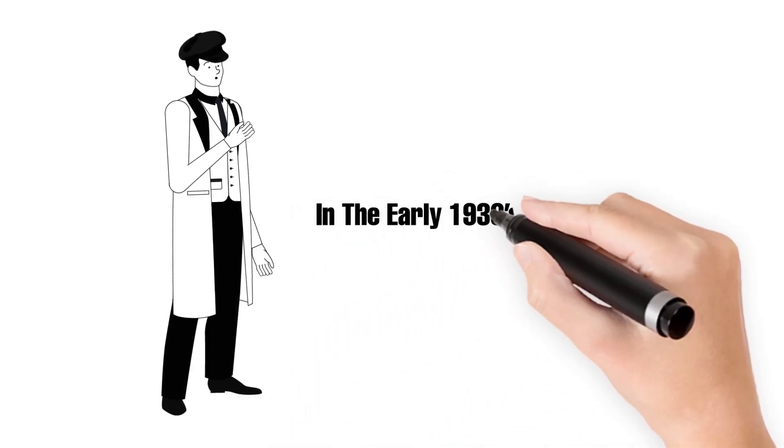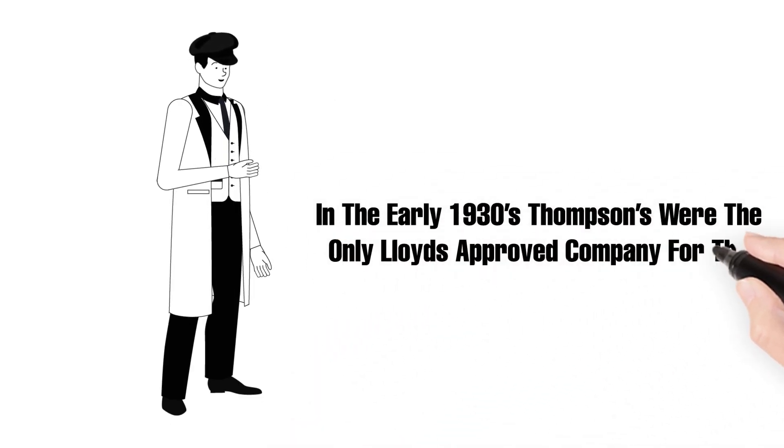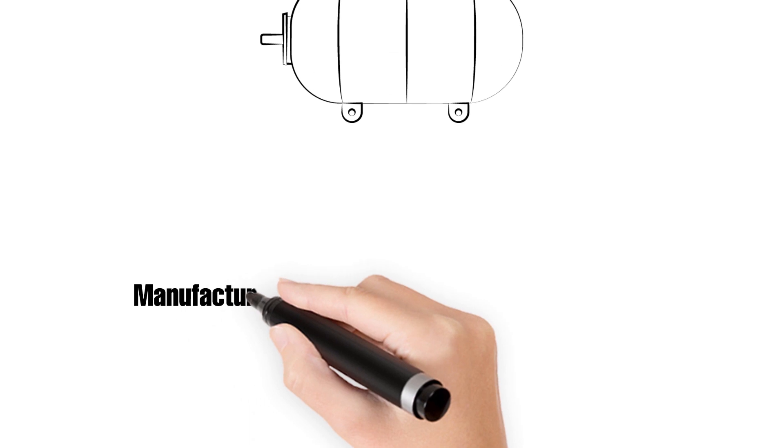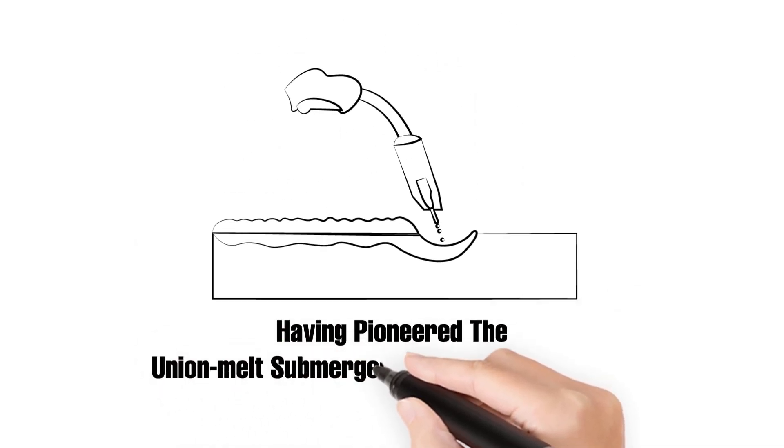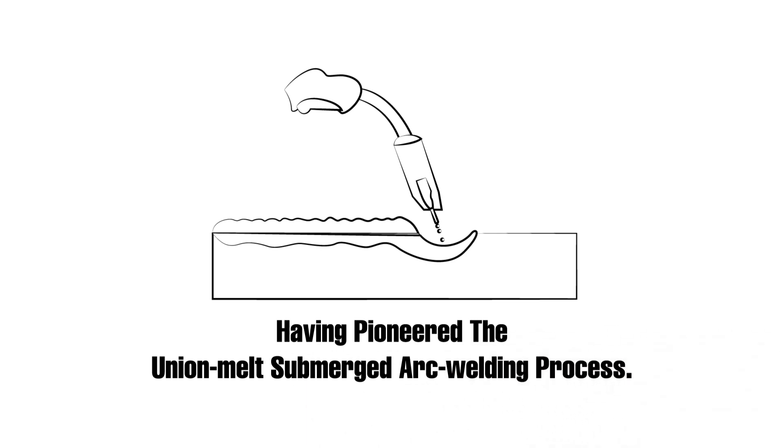In the early 1930s, Thomson's were the only Lloyds approved company for the manufacture of forge welded pressure vessels, having pioneered the Union melt submerged arc welding process.